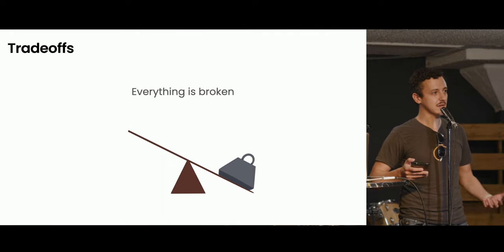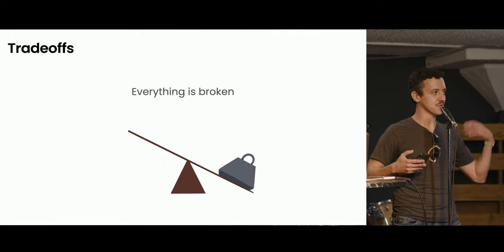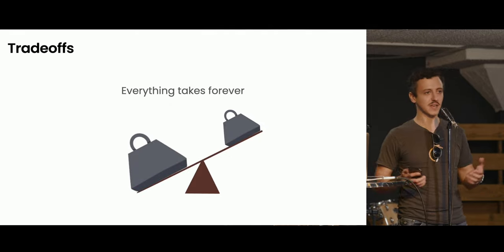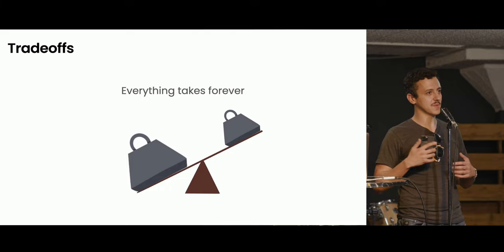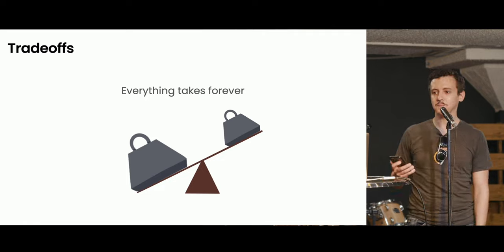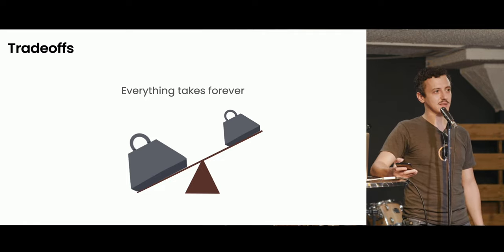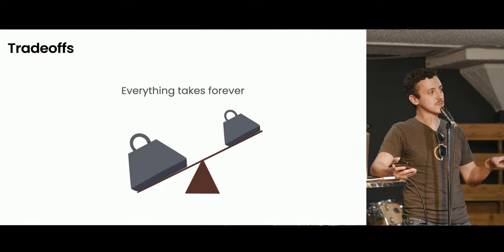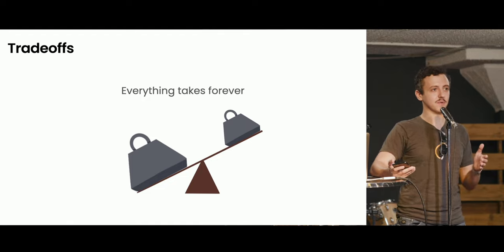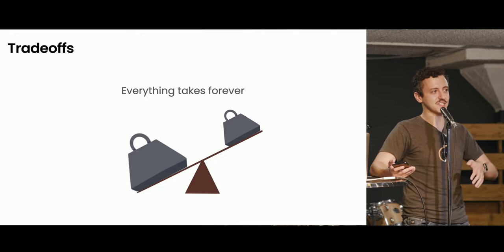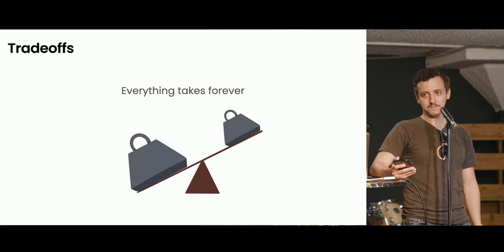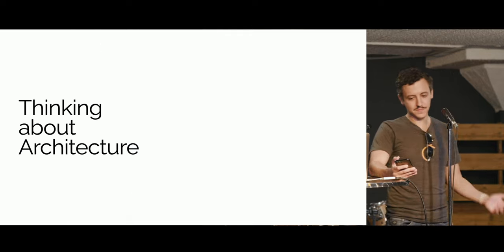Sometimes you migrate to a new architecture, rewrite everything, and end up in an equally bad place where everything takes forever — either because of tons of boilerplate or because you have to coordinate 50 different services to get anything done. If you completely ignore architecture you're likely to end up with both problems: everything is broken all the time and it takes forever to do anything. So architecture is important.